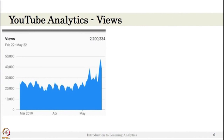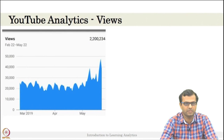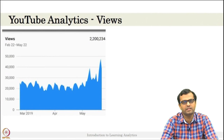This graph shows the user viewing pattern for the last 90 days. You can see that the viewer pattern repeats in a cycle — it goes to a peak, then drops, then peaks again. This is because of weekends: viewer engagement increases during weekdays since this channel is educational content. Most students watch during weekdays and there is a drop on weekends, creating a small cyclic peak pattern.